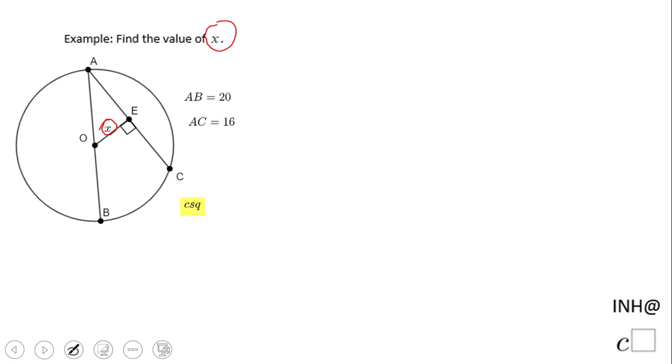If you notice, we have here what we call a right triangle, because if this angle is 90 degrees, the other one is 90 degrees as well. So let me draw that triangle.